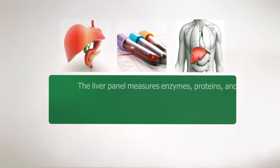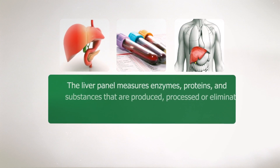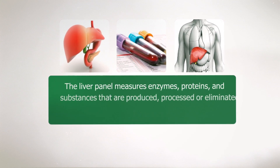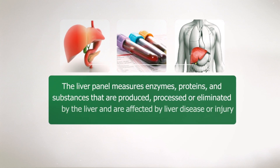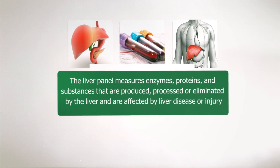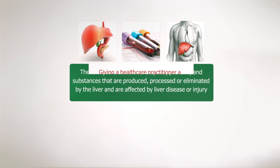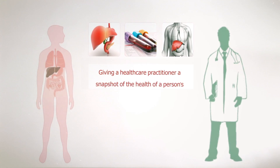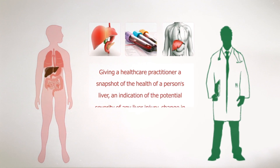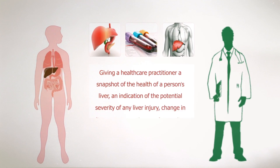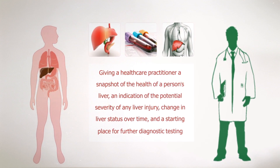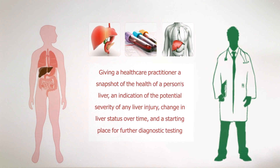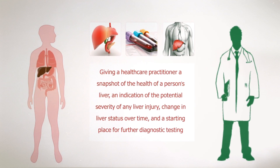The Liver Panel measures enzymes, proteins, and substances that are produced, processed, or eliminated by the liver and are affected by liver disease or injury. This gives a healthcare practitioner a snapshot of the health of a person's liver, an indication of the potential severity of any liver injury, change in liver status over time, and a starting place for further diagnostic testing.